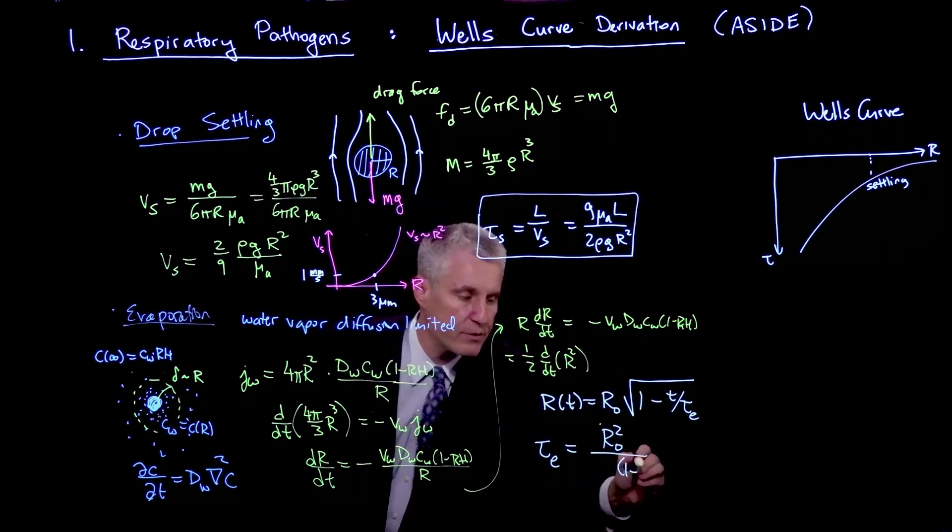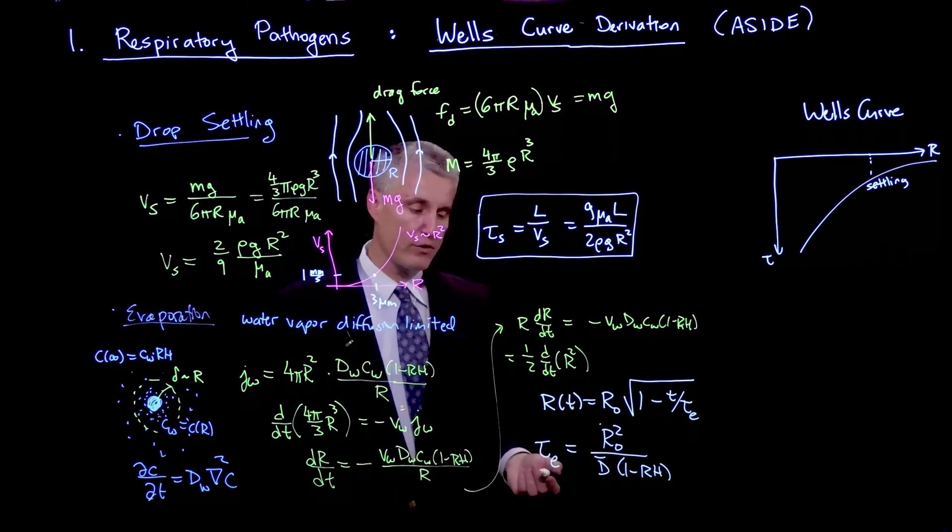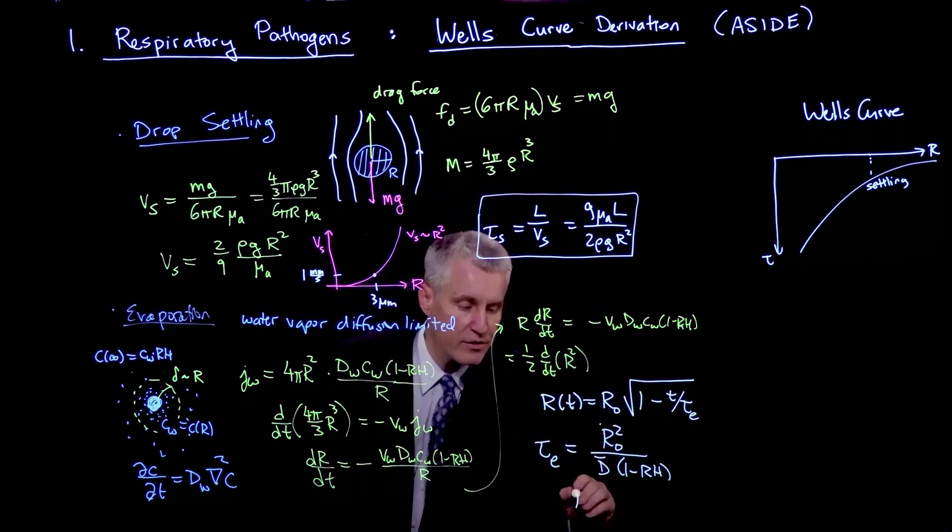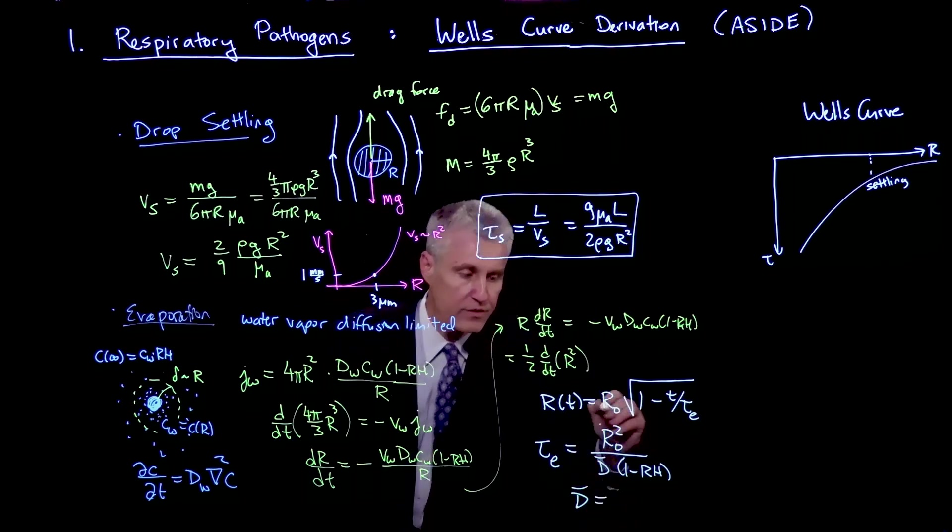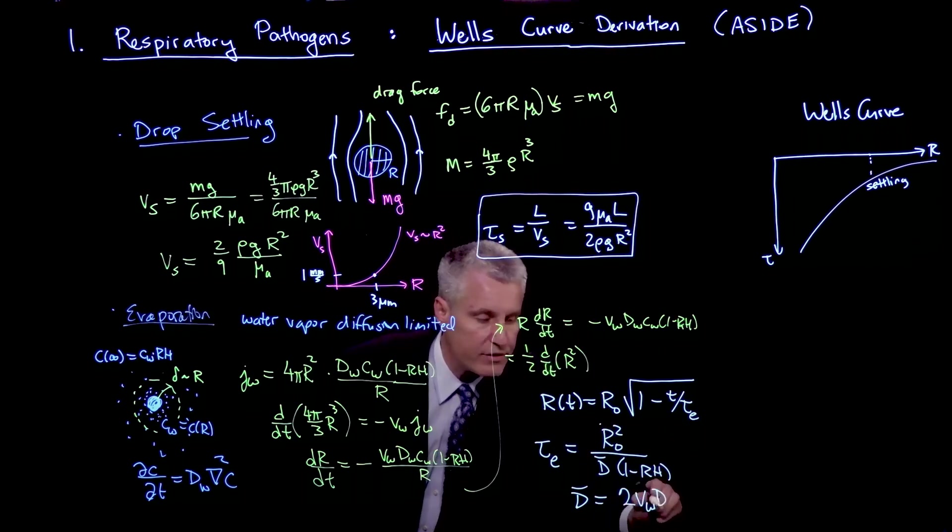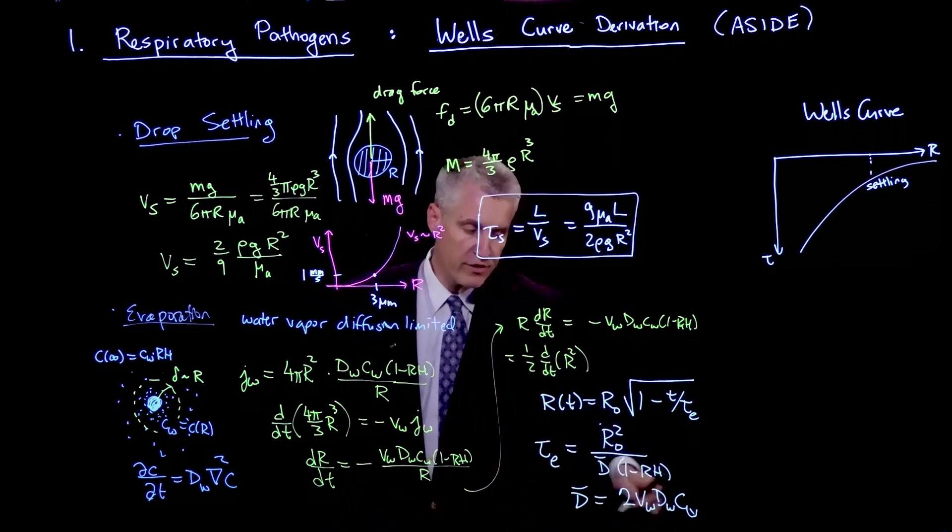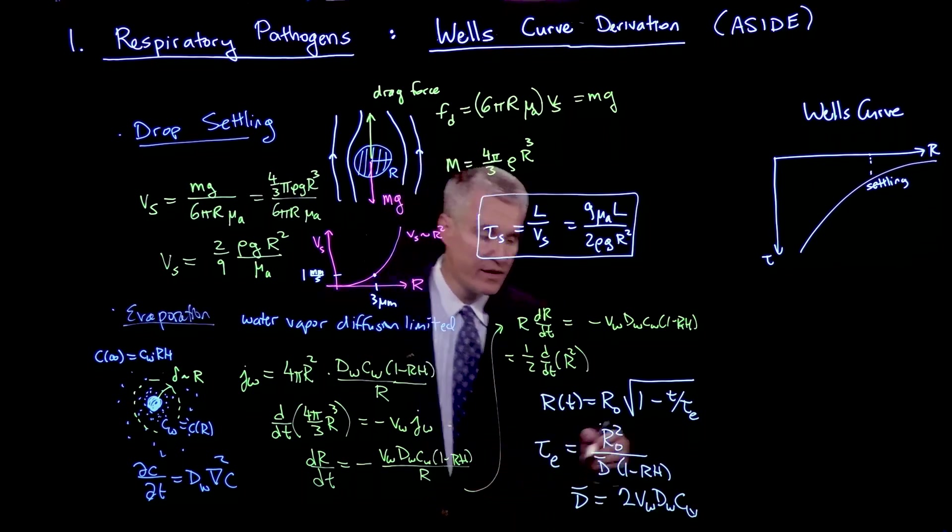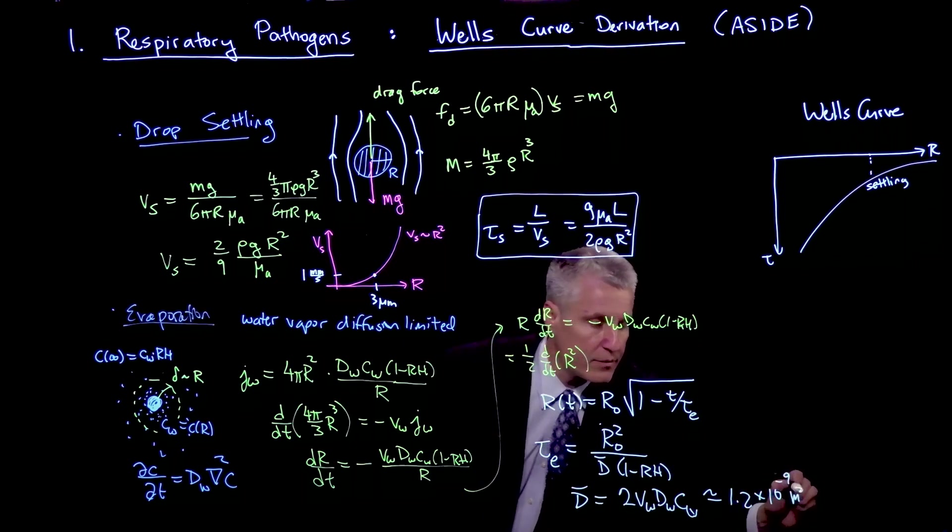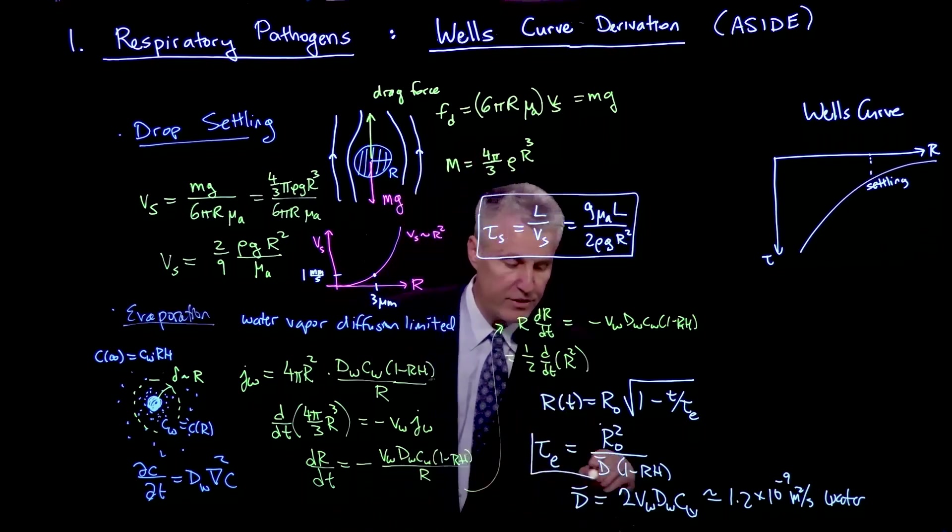That evaporation time is given by r₀² times basically all these coefficients here, where I'll separate out the effect of humidity. Then a bunch of other coefficients which have units of length squared over time, because r₀ is a length squared, so it's effectively some kind of diffusivity. What we get from this calculation is that this effective diffusivity that goes into this expression is there's a factor of 2 from this, there's 2vw dw Cw. If you plug in values for water vapor, the saturation pressure and the diffusivity and the volume of water in air, then this coefficient turns out to be 1.2 × 10⁻⁹ meters squared per second for pure water.